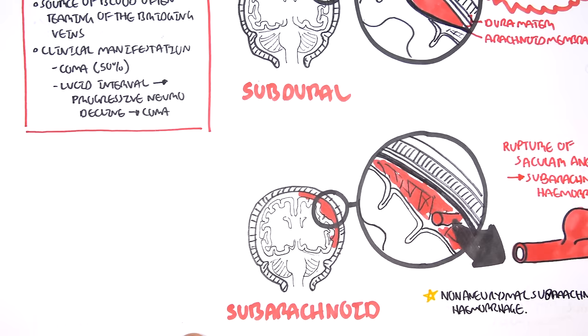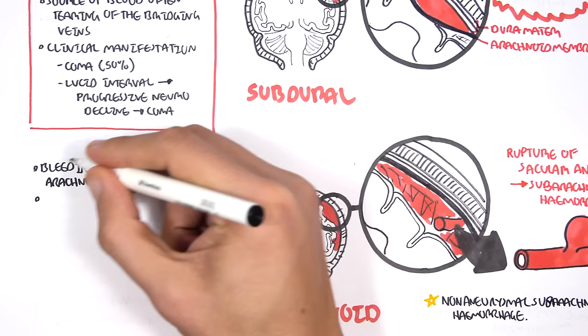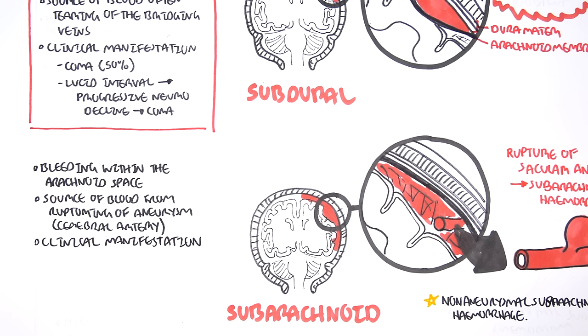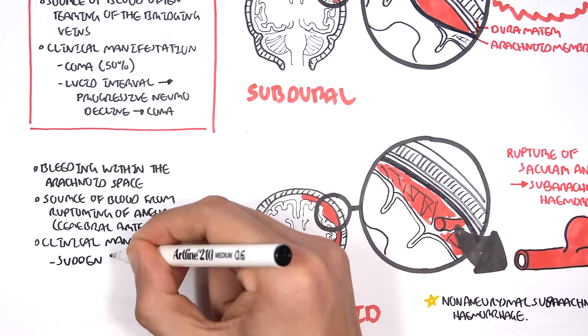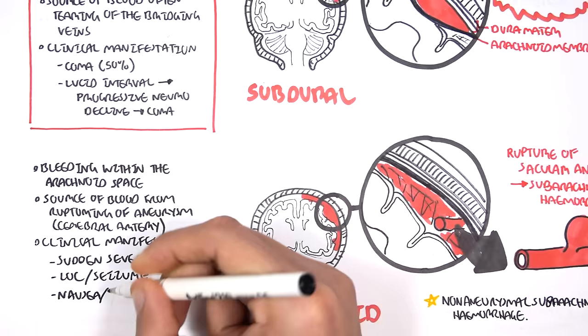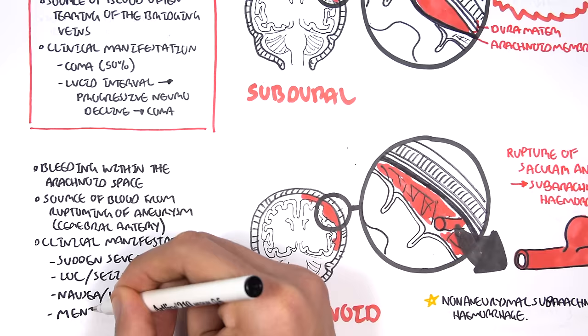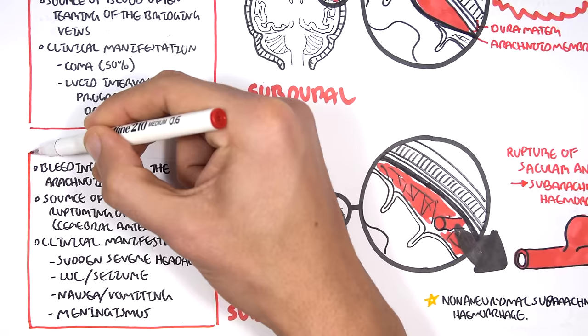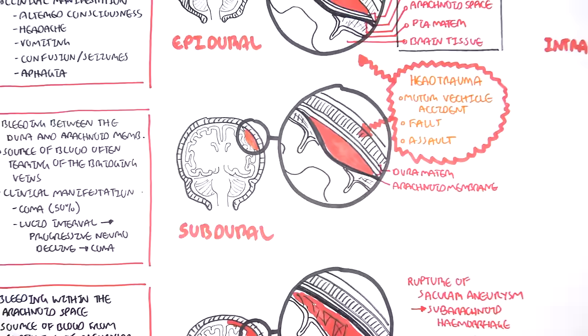Bleeding in subarachnoid hemorrhage occurs within the subarachnoid space, with the source being rupture of an aneurysm, most commonly from the cerebral arteries. A key clinical feature is the sudden, severe 'thunderclap' headache. There is also loss of consciousness, potentially seizures, nausea, vomiting, and meningismus — a triad of symptoms relating to irritation of the meninges, including stiff neck and photophobia.